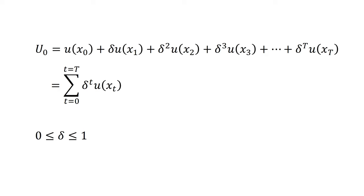So, u0 equals utility of x0 plus delta times utility of x1 plus delta squared times utility of x2 plus delta cubed times utility of x3 through to delta to the power of capital T times the utility of x capital T. And that in turn equals the sum from t equals 0 through to t equals capital T of delta to the power of t times utility of xT, with delta again lying between 0 and 1.